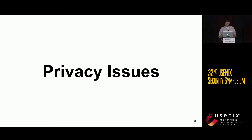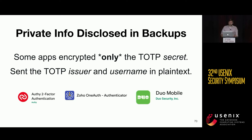In addition to security issues, we found several privacy issues, but I only have time to highlight one that is particularly important. Some apps encrypted the TOTP secret — which is great — but chose not to encrypt other fields like the issuer and the username. For example, users of the Authy and Zoho OneAuth apps who enabled cloud backup were unknowingly sending the app developers the names of the websites and services they used, and their usernames for those accounts.